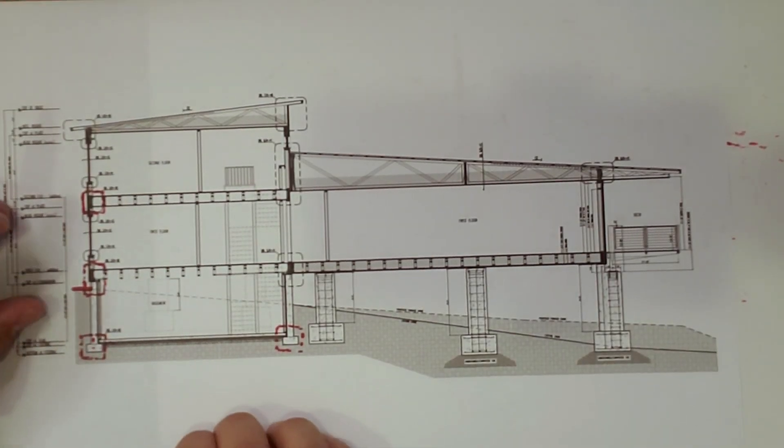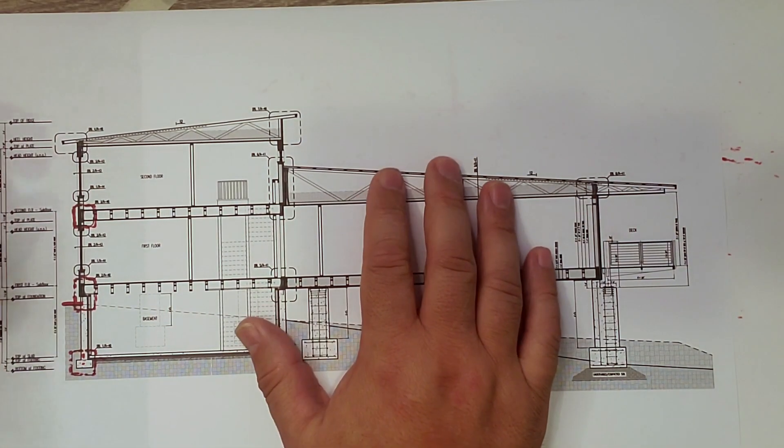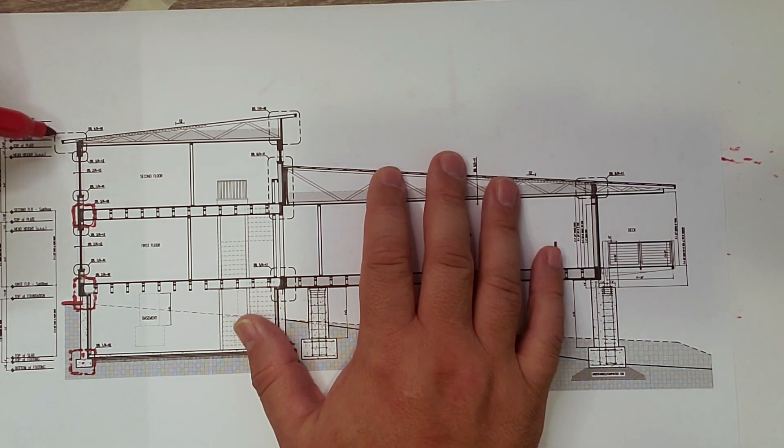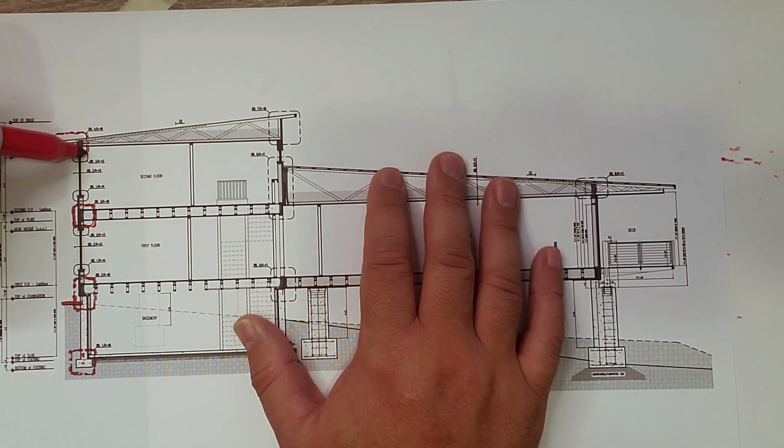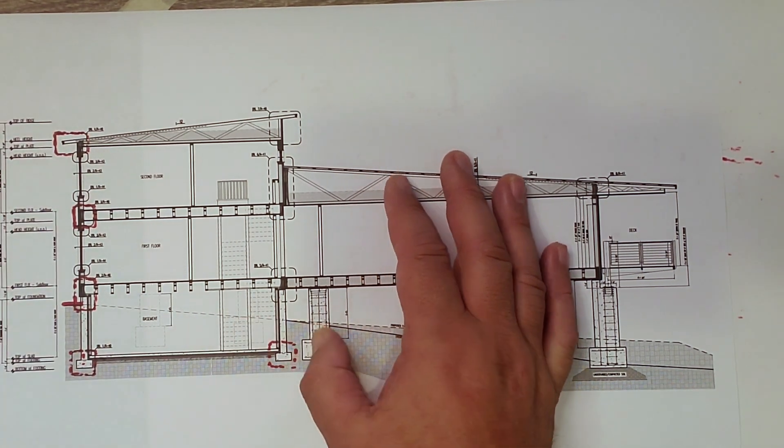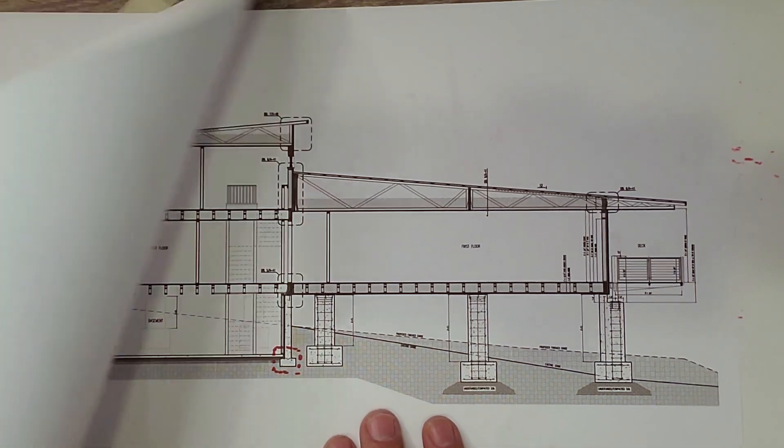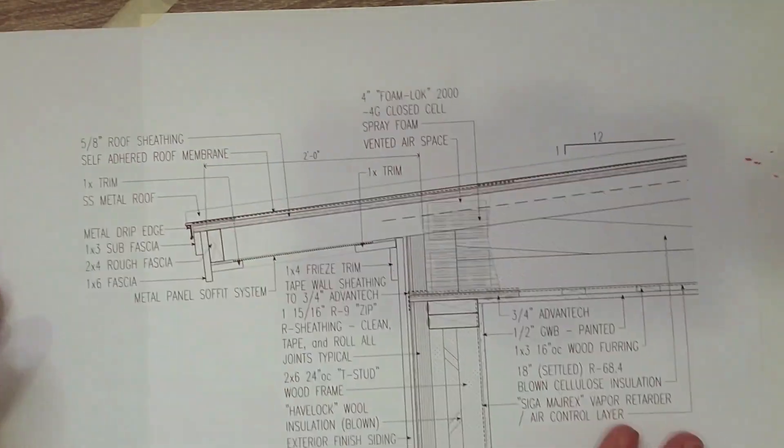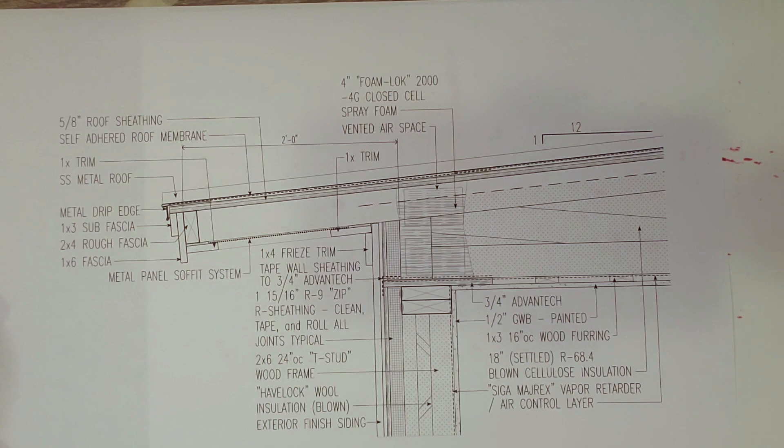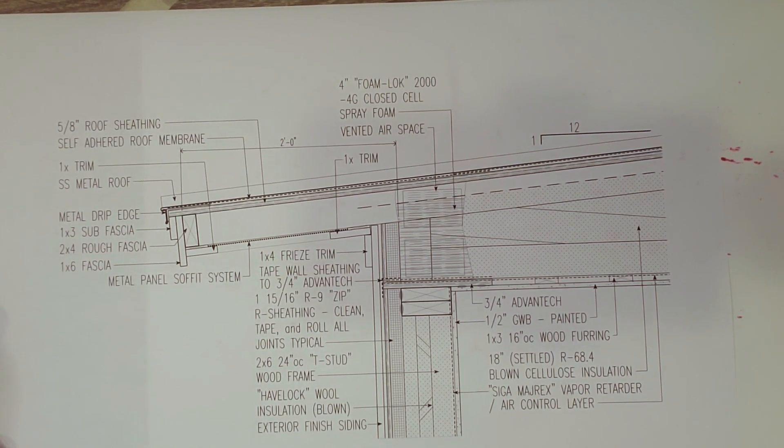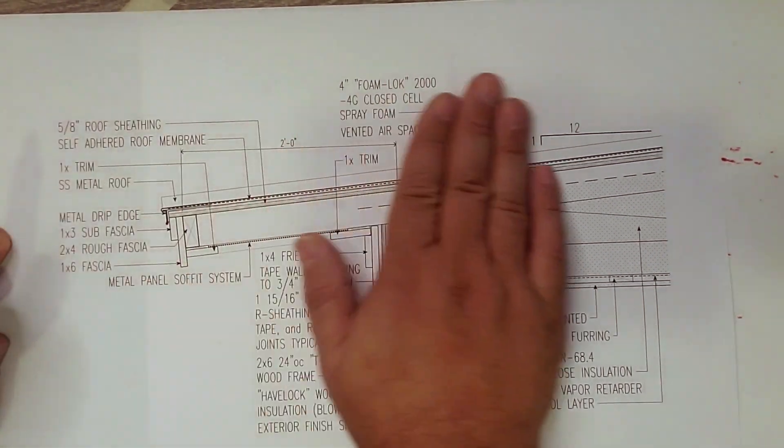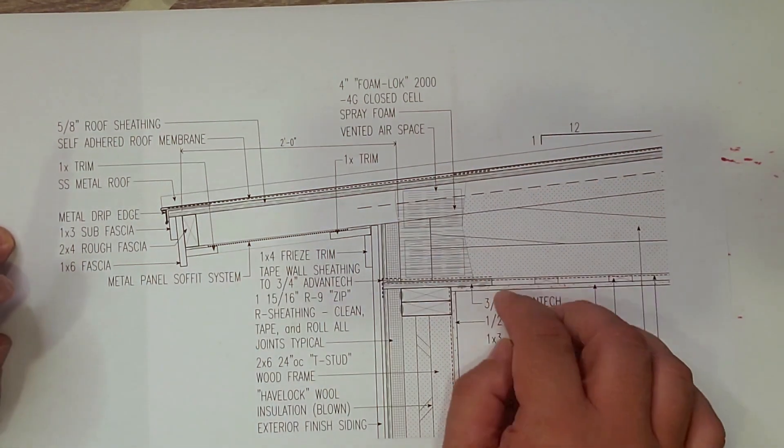All right. So here's our building section. So we get an understanding of where this detail is. We're talking about the roof eve. We're talking about that detail right there where the second floor wall meets the roof. So let's talk about it. I'll just throw that sheet. And there we have that roof eve detail.